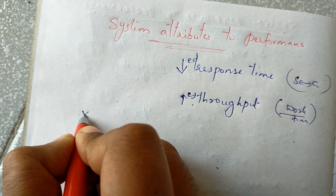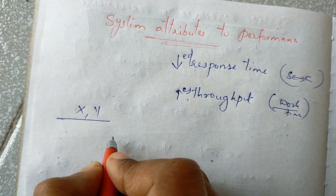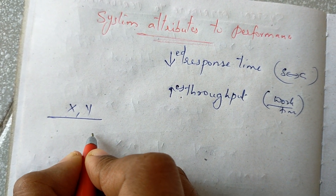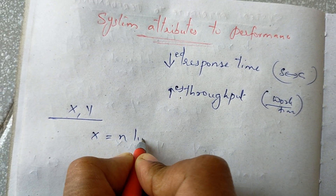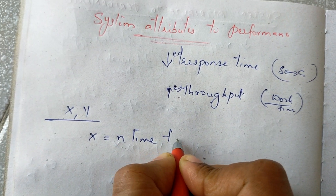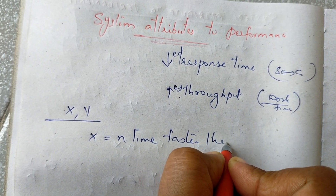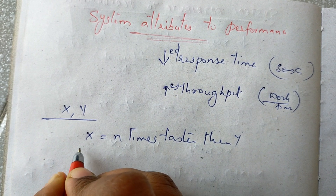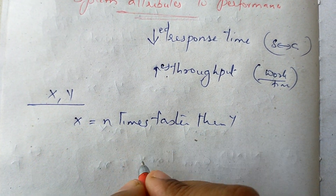Let's say x and y. X is n times faster than y.